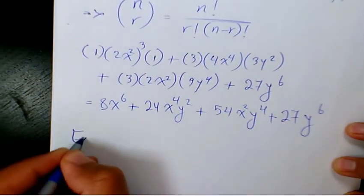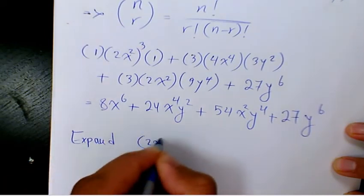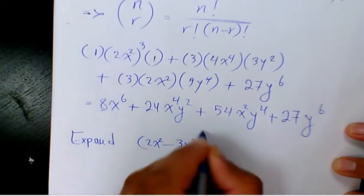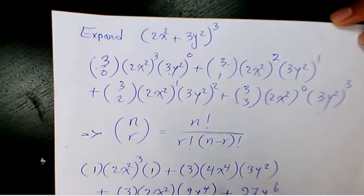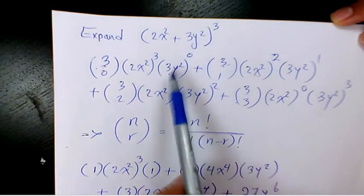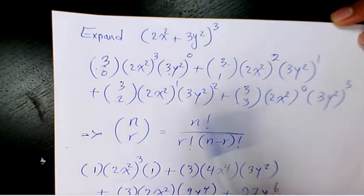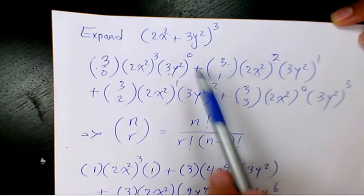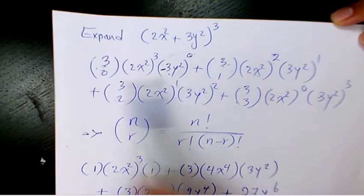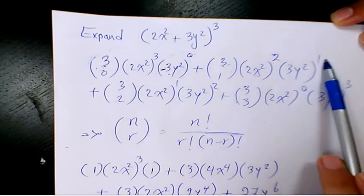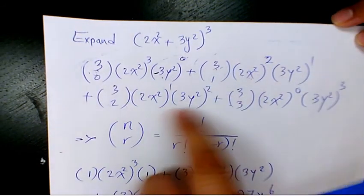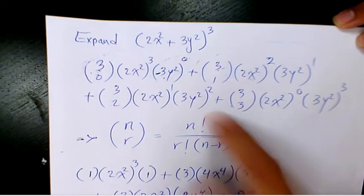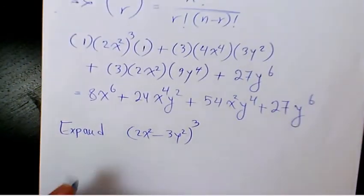Now if you have the expansion of (2x² minus 3y²) to the power of 3, what should we do? In these cases, that's going to be negative 3y², so you put negative 3y² in place of 3y² throughout. The term to the power of 0 remains the same, the term to the power of 1 is negative, the next one remains positive, and the last one is negative again.